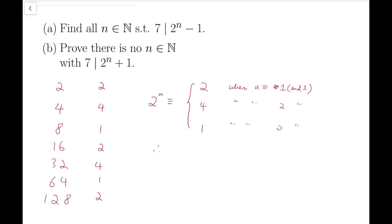Therefore, whenever n is a multiple of 3, 7 divides 2^n - 1. And these are the only possible cases.